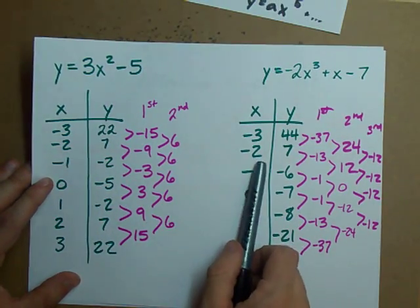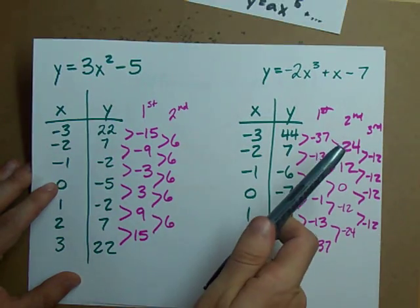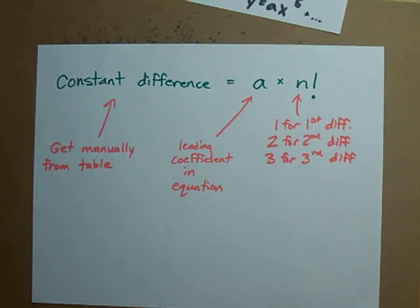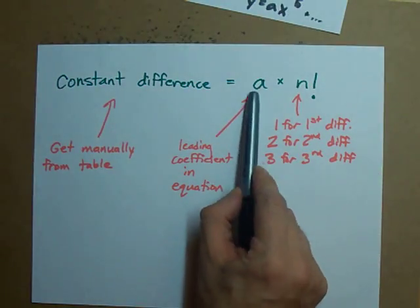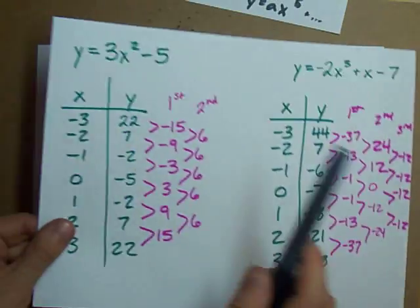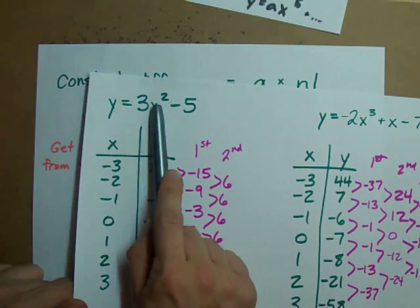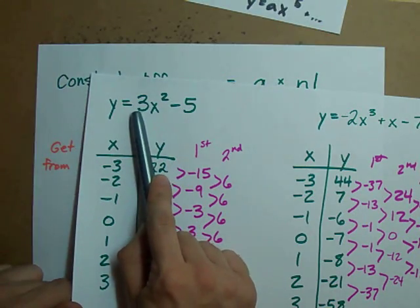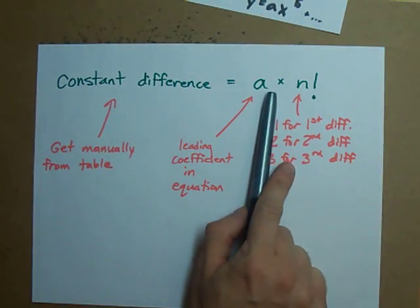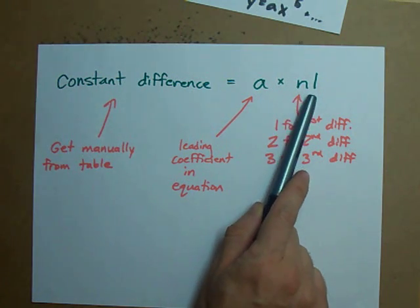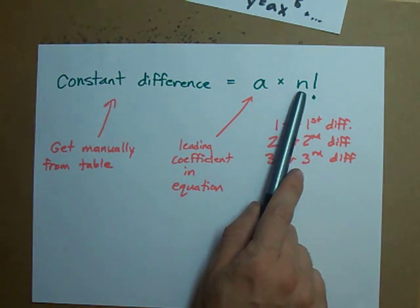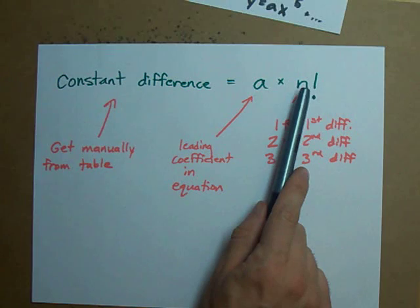In fact, that constant difference 6 was equal to my leading coefficient in the equation. My leading coefficient, my coefficient on the x squared here, was 3 multiplied by 2 factorial. Now 2 factorial is 2. I'll get into what it means later, but 3 times 2 gives me my 6.